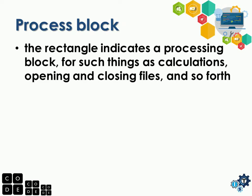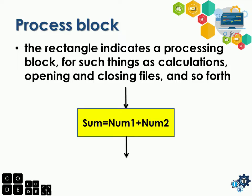Next, we have the process block. A rectangle indicates a process block — that is the symbol used. It is used for things such as calculations, opening and closing files, and so on. From the word process block, these are the processes or actions that we perform. For example, we have num1 and num2, and we want to calculate their sum: sum equals num1 plus num2. Don't forget — there is only one entry and one exit point for a process block.